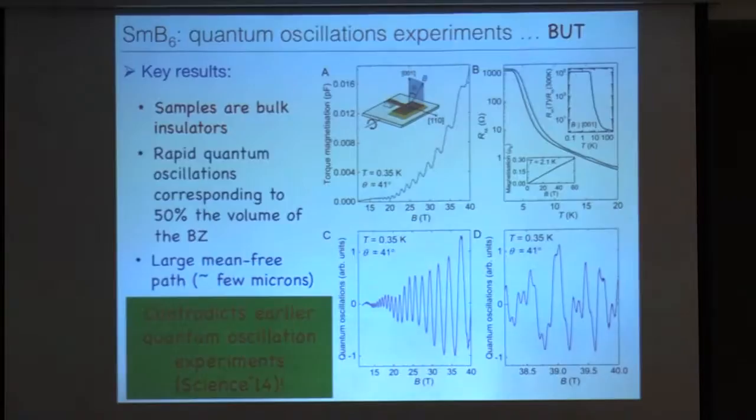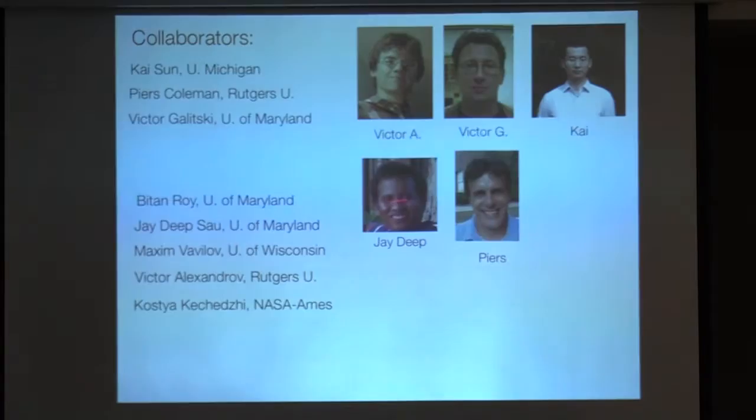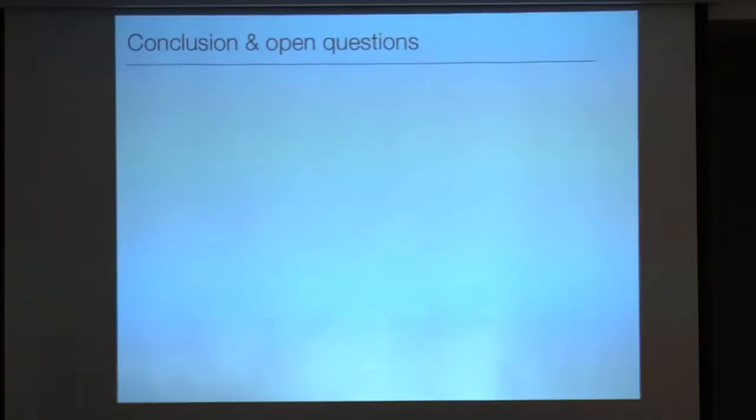Let me just, before I conclude, let me acknowledge my collaborators. Viktor Alexandrov, who used to be a graduate student at Rutgers. He is now a postdoc at the Institute of Advanced Study in Princeton. Viktor Galitsky from Maryland. Kai, who is now a professor at Ann Arbor. Jay Dee, also now assistant professor at Ann Arbor. And Piers. And the weak localization project was done together with Maxim. Unfortunately, as a scholar, he didn't download his figure from the internet. And I'm sure many of you know his face. And Kostya Kechedzhi, who has been a postdoc at Rutgers. He is at NASA Ames Lab in California.